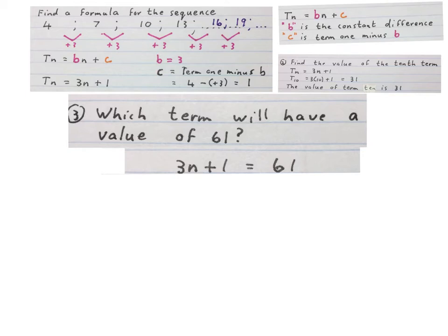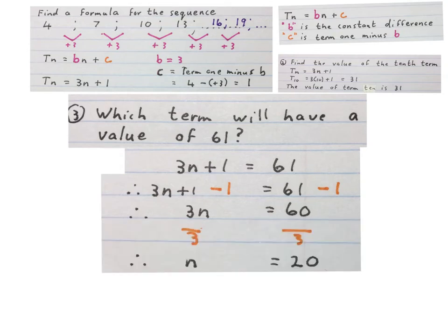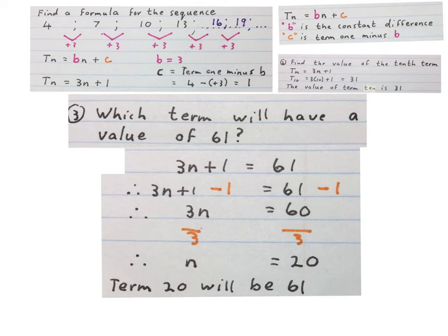We can do inverse operations and solve for n. Minus 1 on both sides and you get 3n = 60. Divide by 3 on both sides, you get n = 20. Then you write term 20 will be 61.